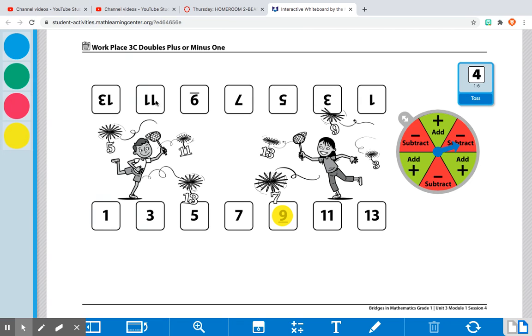I'm going to toss. Now I'm pretending to be this person. I got four, so now I need to know my double fact. Four plus four equals eight. And now I need to spin. It says minus, so what is eight minus one? It is seven. So I'm going to cover up the seven.